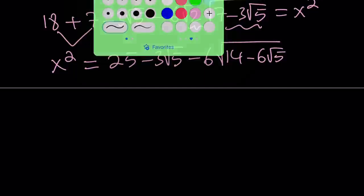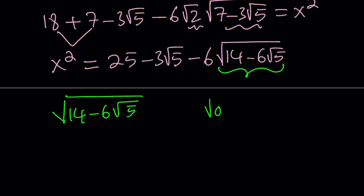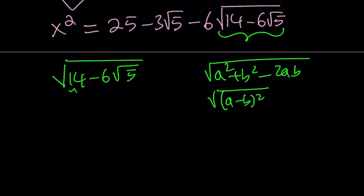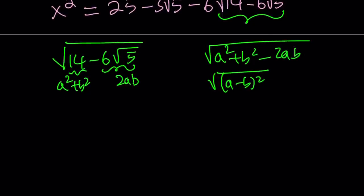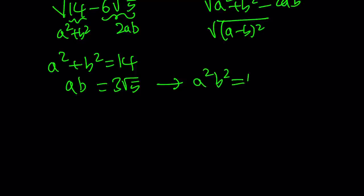Let's focus on this expression and simplify it using algebra. We want to make it look like the square root of a squared plus b squared minus 2ab, because this is the square root of (a minus b) squared and that can be simplified. So we set a squared plus b squared equal to 14, and 2ab equal to 6 root 5. Therefore ab equals 3 root 5. Squaring both sides gives a squared b squared equals 45.